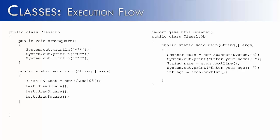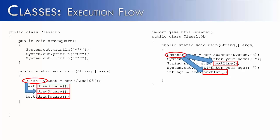Next, what I want to talk about is where the main method can be placed. I have the example from the previous slide on the left and a new example on the right, which I've called Class 105b. There are various methods inside of both classes — the drawSquare method and nextLine and nextInt. The drawSquare method comes from the class 105 class, while nextLine and nextInt come from the scanner class, whose methods are nowhere to be found inside the program.